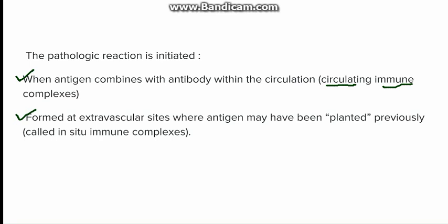The second variant is when the antigen and antibody complex is formed at an extravascular site. Here, the antigen is normally implanted on the surface. We can take an example of post-streptococcal glomerular nephritis where the antigen, that is the streptococcus protein, is planted on the glomerular basement membrane. There it causes antibody formation and further immune complex leading to in-situ immune complex formation and further type 3 hypersensitivity reaction.